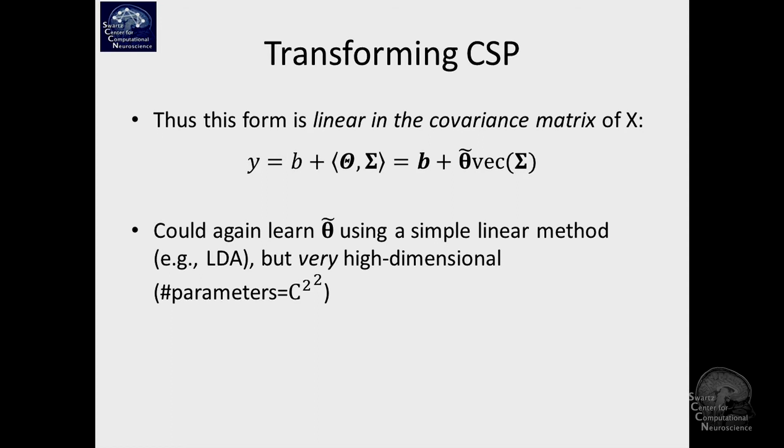The trouble is we cannot just use linear discriminant analysis because the vector it has to learn is very long—number of channels squared. If you use LDA, it wants to find the covariance matrix of that to characterize the distribution, and that would be number of channels squared squared. It's absolutely hopeless to try to learn say 10,000 parameters or more with that.